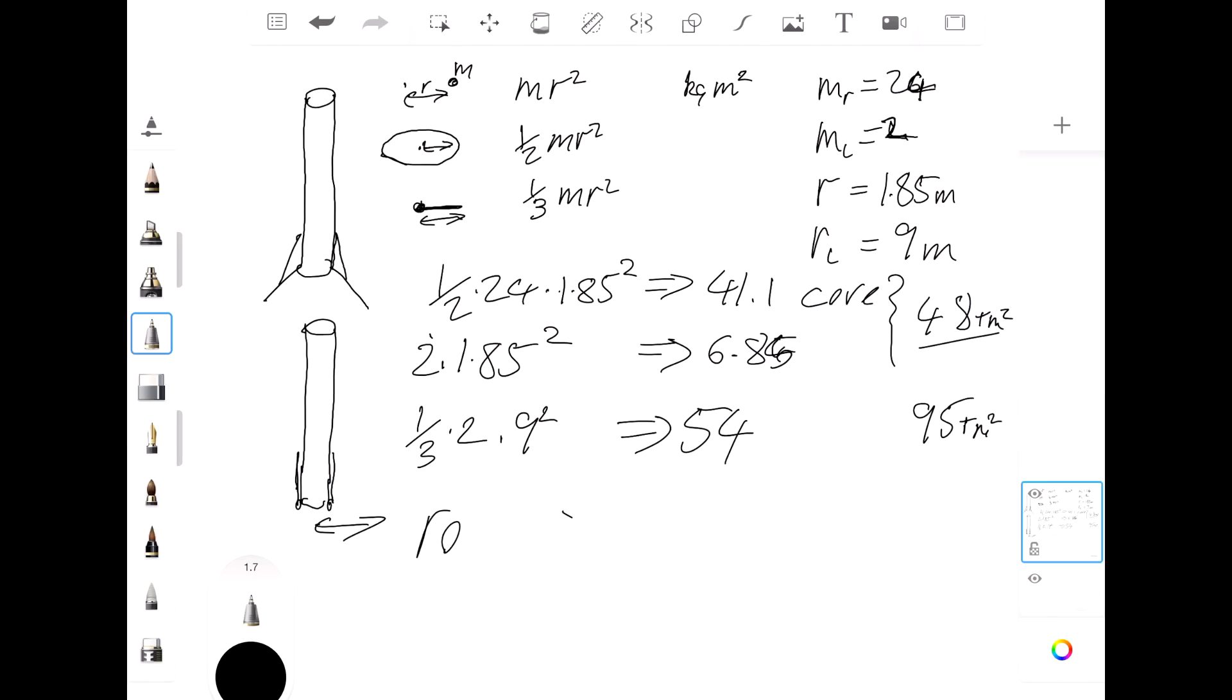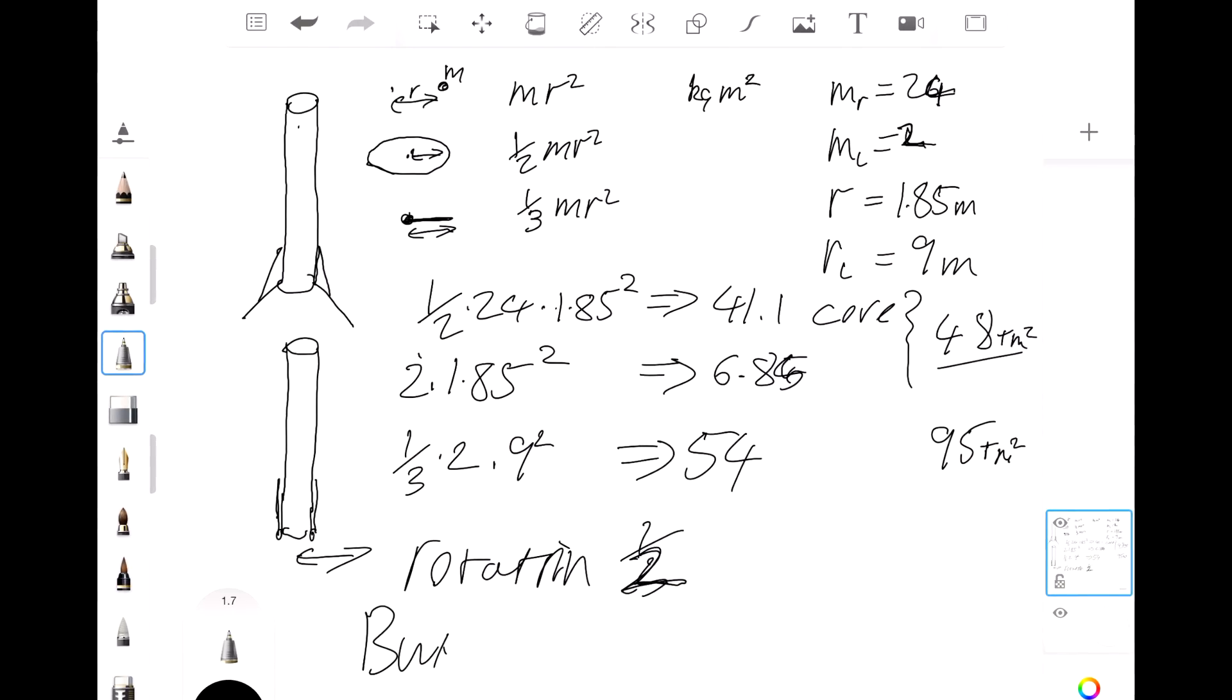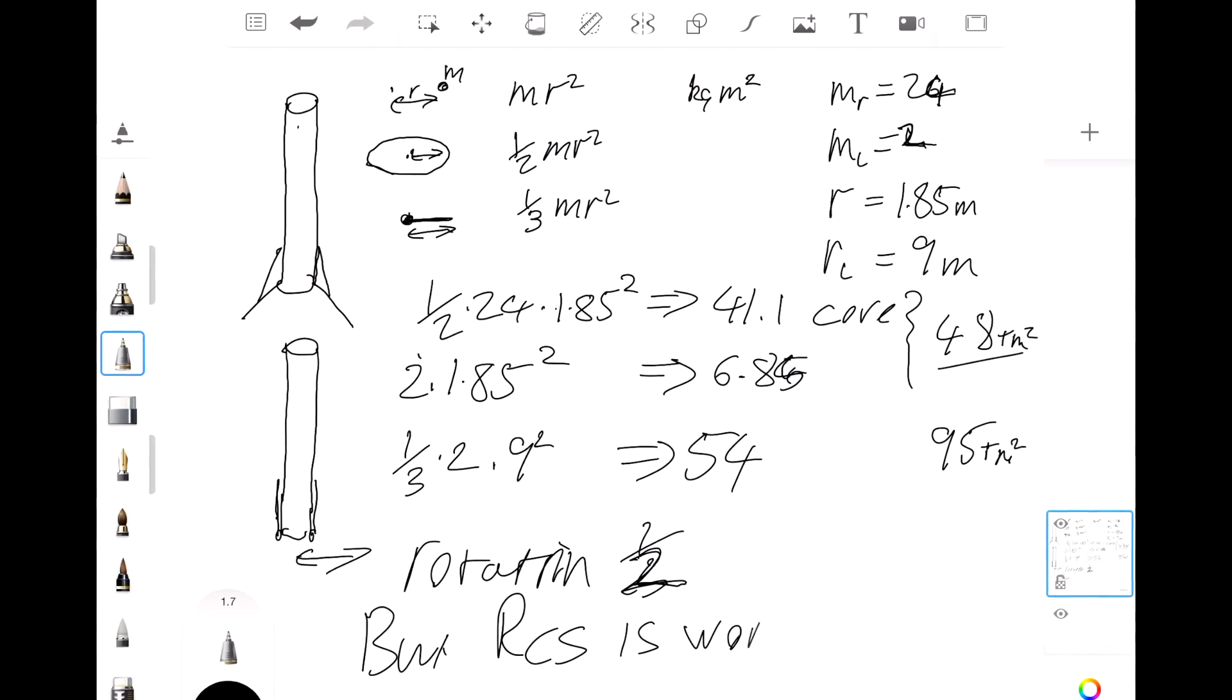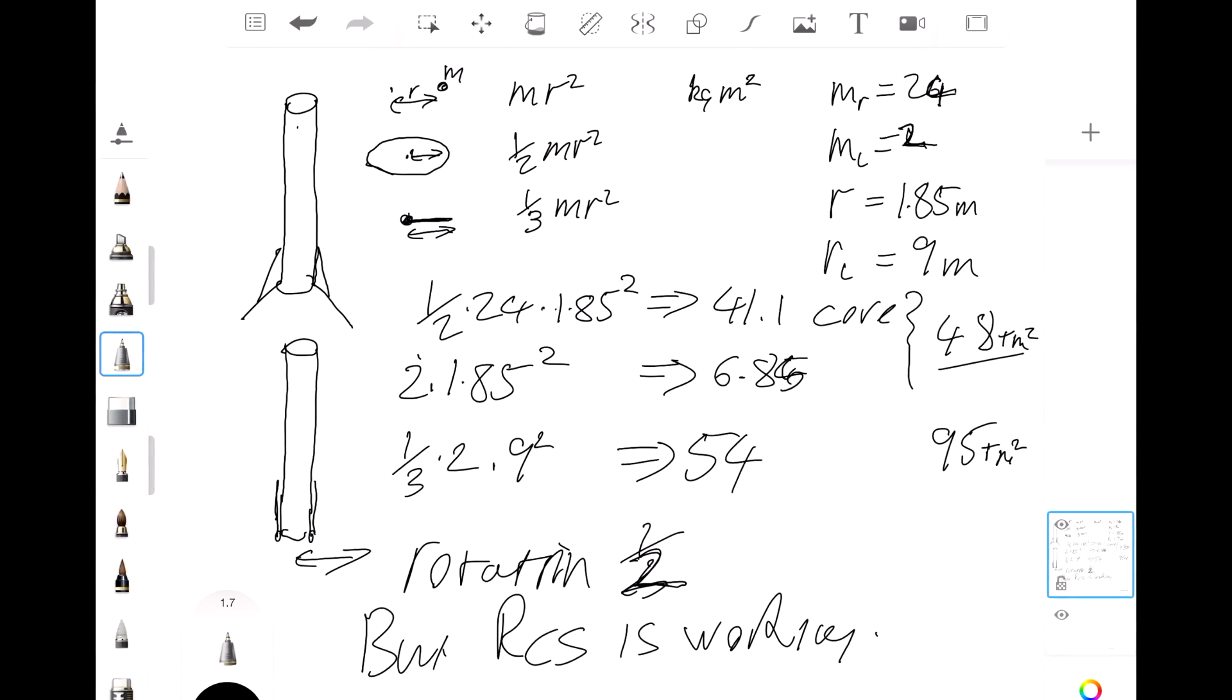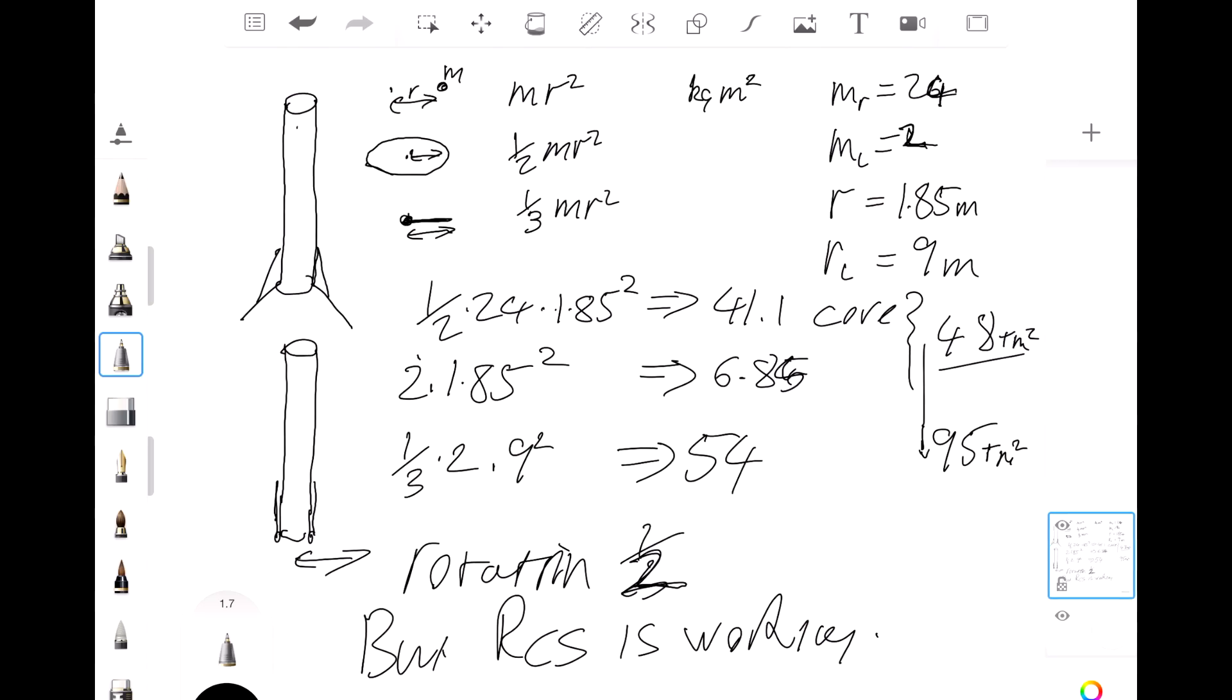So our rotation becomes one half of what it was. But first of all, that doesn't stop rotating—that only cuts the speed down. But there's a big but here: RCS is working right now. The RCS thrusters are trying to slow things down, and those don't change the radius, so their torque is constant. And so doubling the moment of inertia means that the torque is now reducing the angular velocity more slowly.